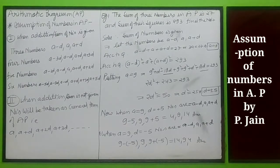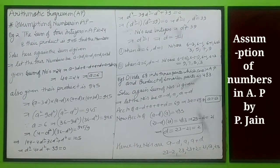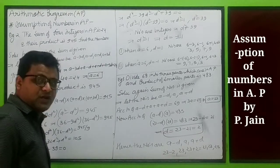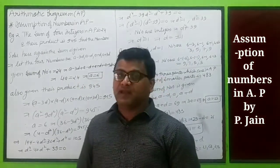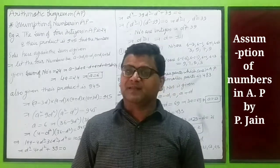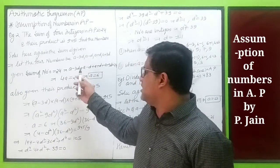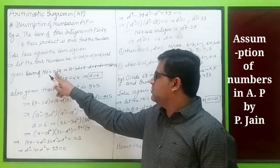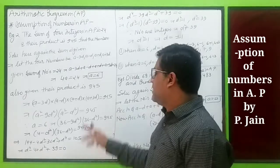Example two: the sum of four integers in AP is 24 and their product is 945. The sum is given, so let the numbers be a minus 3d, a minus d, a plus d, a plus 3d. According to the question, their sum is 24, so 4a equals 24 and a equals 6.